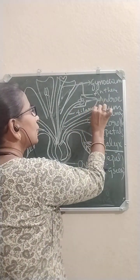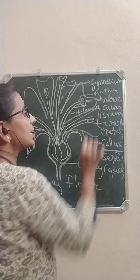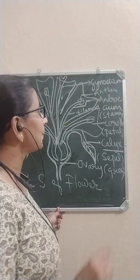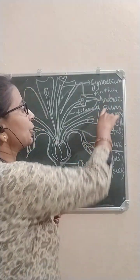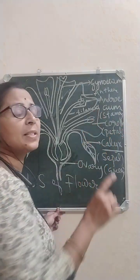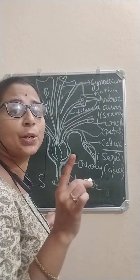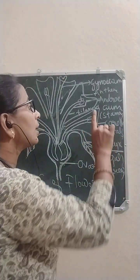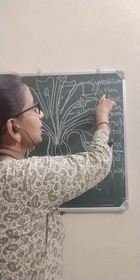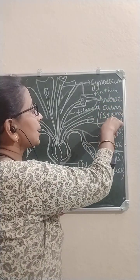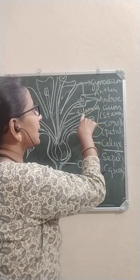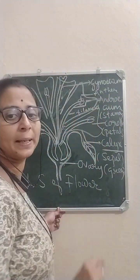The third member of a flower is androecium, and its member is called stamen. Stamen is the male reproductive organ in a flower. Each stamen has two parts: anther and filament.